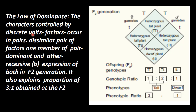The characters are controlled by discrete units — that is what we now call genes. At the time of Mendel's research, genes were not known, so he called these discrete units 'factors.' These factors occur in pairs. If they are dissimilar pairs — one is dominant and the other is recessive — this is the basis of the law of dominance. In the F2 generation, both factors are expressed in the plants phenotypically.